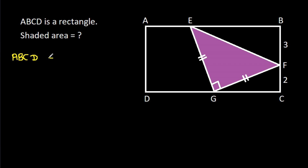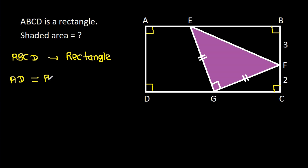ABCD is a rectangle, which means these angles will be 90 degrees. AD will be equal to BC, and BC is BF plus CF. BF is 3 and CF is 2, so BC equals 5. Therefore, AD is 5.